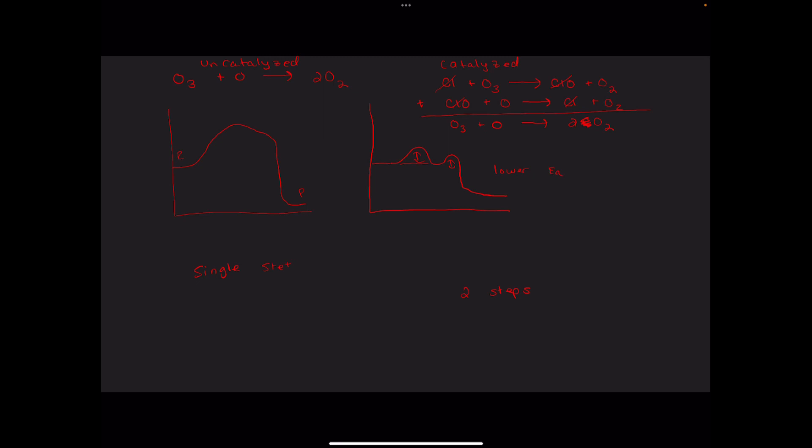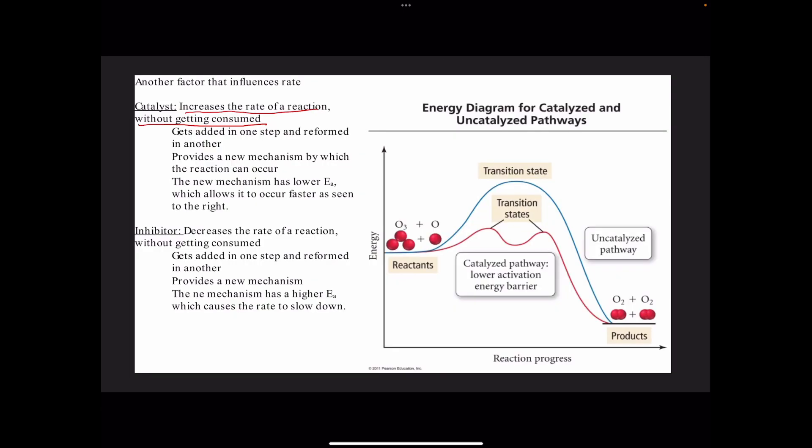Ozone, making up our ozone layer, can interact with oxygen atoms, but it's not a particularly conducive reaction. It's a very slow rate. The presence of chlorine, which can come from pollutants, can catalyze that reaction and cause the ozone to break down and form oxygen molecules. The catalyst provides a new pathway by which our reaction can occur. The new pathway has lower activation energy, so it happens more quickly.